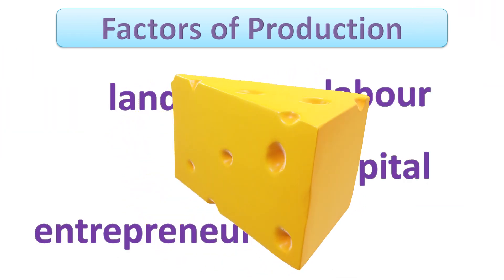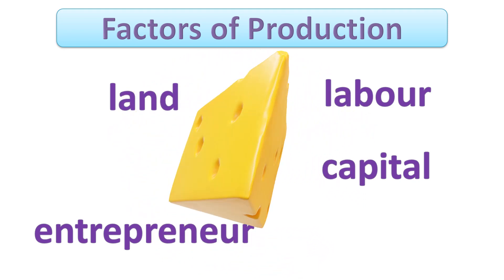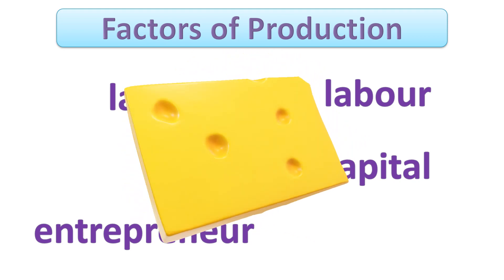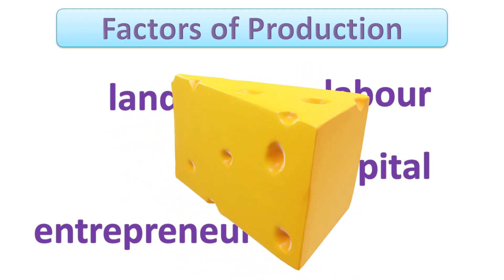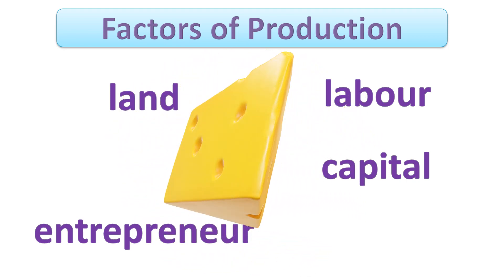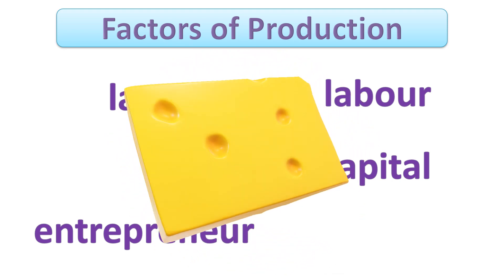What are the inputs needed in the production of processed cheese? A cheese can be produced in a household or in a big manufacturing plant. Regardless, the milk that cattle produce is the main ingredient in cheese making. Cattle and the resources needed to raise them healthily are all from nature. The farm and equipment for a cattle-raising venture are the capital. Additional ingredients such as salt, sugar, and vegetable oil are also from nature. Workers must carefully follow the recipe for a successful cheese product.